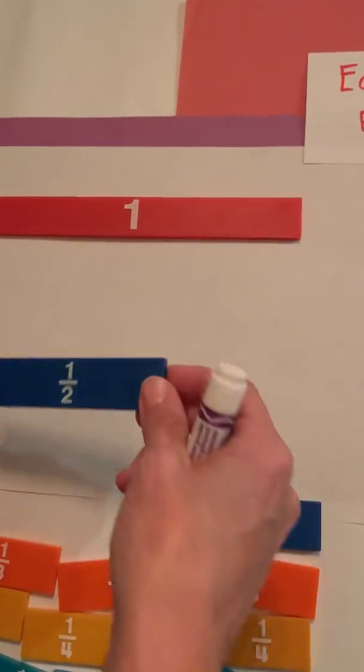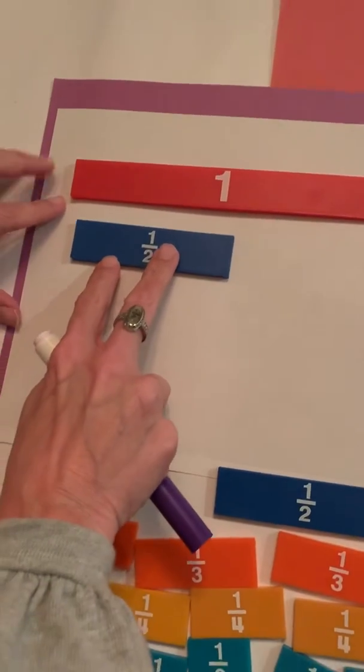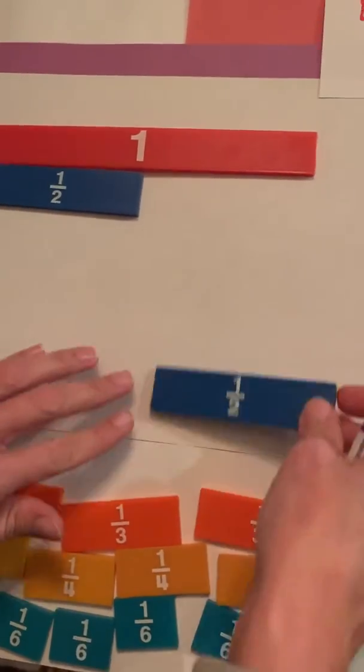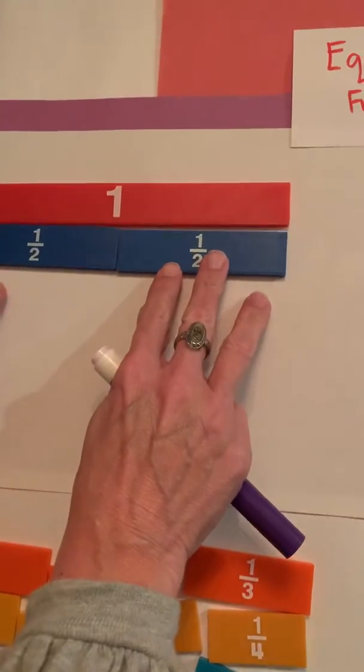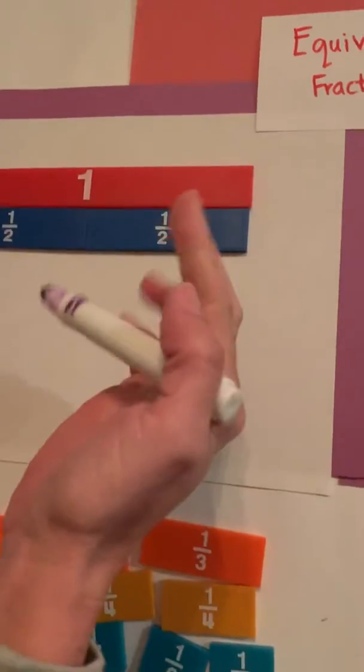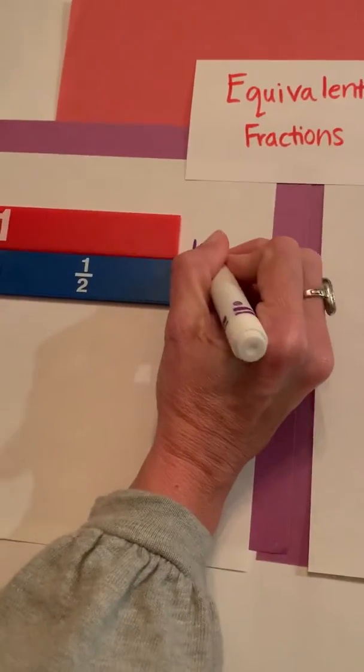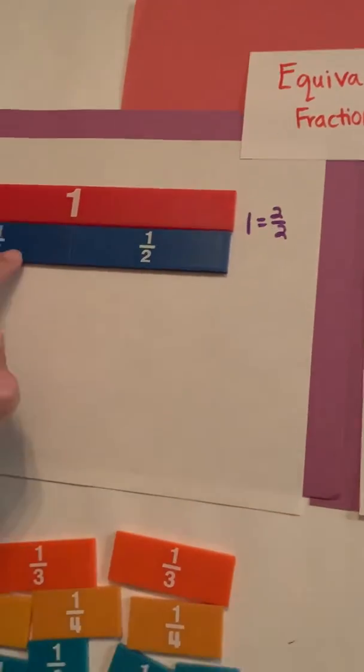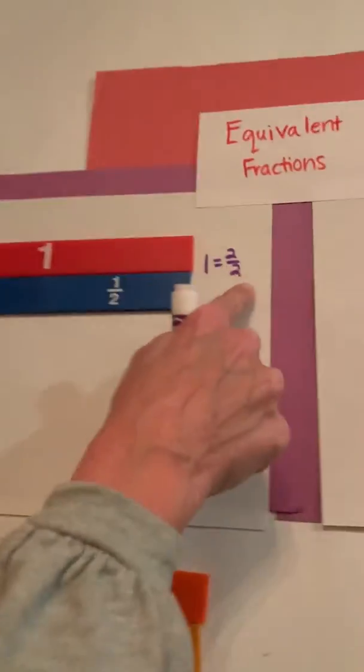So I have one half here, and if I put one half, it's going to be important to line it up on the end. And so you can see I have one half, and I put the other one half up, and I can see that that is equivalent. They start and stop at the same spot. So I can say that one is equal to two halves.